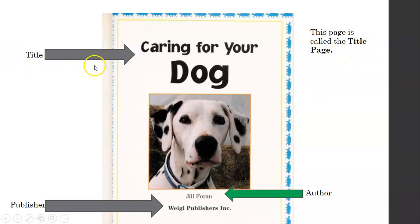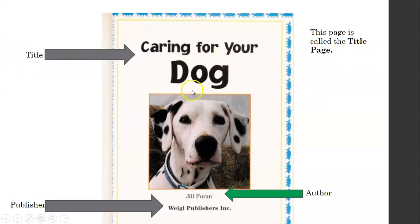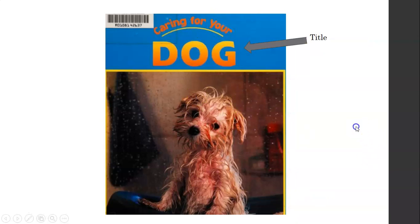On the title page, you're going to find the title right here, Caring for Your Dog. We just saw it here, so here it is again. Kind of like why they call it the title page, right? Because the title's on it big. And here we have the author. The author, the person that wrote the words, was Jill Foren. And right here is the publisher, Weigel Publishers Incorporated. The publisher is the people that puts the book on shelves, and they buy the paper, and they put everything together. So Jill wrote the words, and Weigel Publishers made the book, the physical book that we're looking at now.